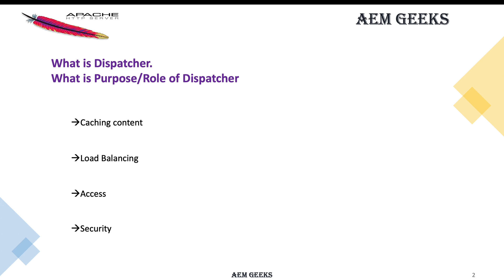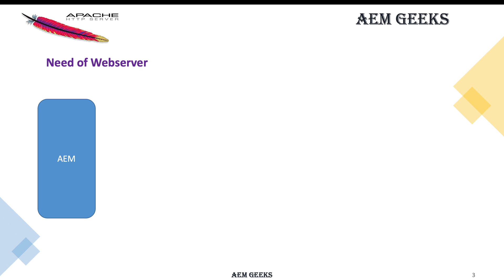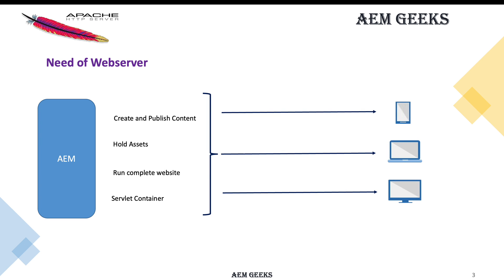I will ask you the same questions again at the end of this tutorial. Now let's start. Before explaining the dispatcher, let's first understand why we need a web server, then we'll talk about dispatcher so you better understand its need. We have an AEM server which is a complete server — it has a servlet container, can create and publish content, hold document assets, and can run a complete website.